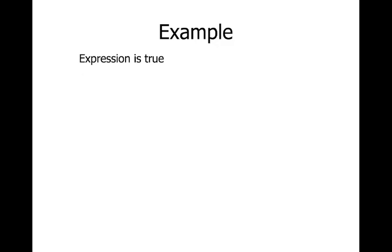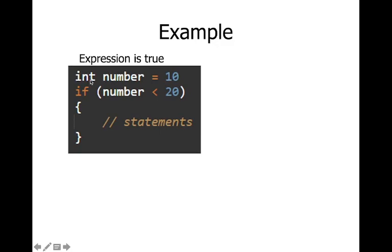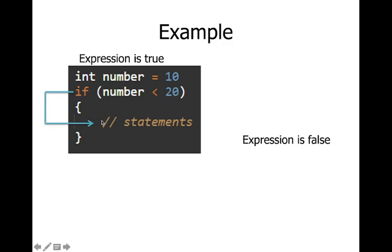Here is an example: we declare an integer 'number' with value 10, then check 'if (number < 20)'. Since 10 is less than 20, the condition is true. You can include any type of expression — relational, logical, or arithmetic — as long as it evaluates to some value. Non-zero and non-null means true.